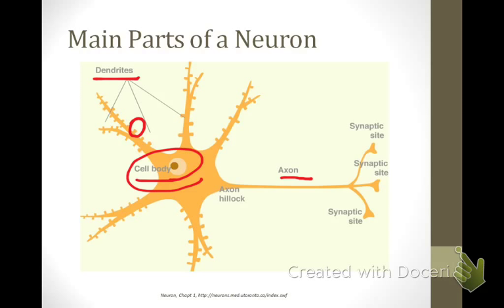The axon is the process that conducts the action potential towards other cells. The action potential is initiated at the axon hillock, travels down the axon to the synaptic sites, or presynaptic boutons, shown here. From the presynaptic bouton, vesicles of neurotransmitter are released and the neurotransmitter can act on the postsynaptic cell.